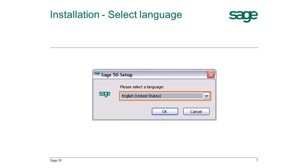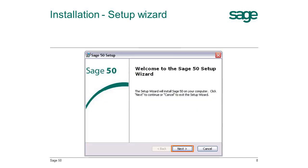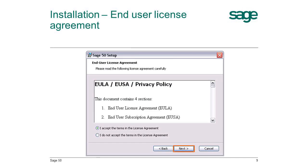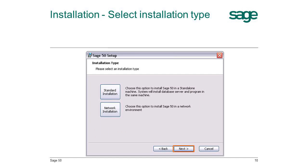Select the preferred language you want to use in the system and click OK to proceed. At the Welcome page, click Next to allow the setup wizard to continue. Next is the end user license agreement and privacy policy — indicate your agreement and click Next to proceed. There are two types of installation: standard or network. The standard installation is the common choice. Click Next to proceed.